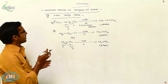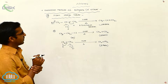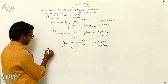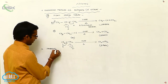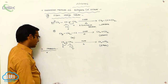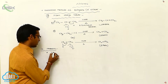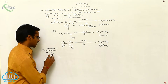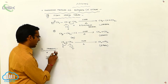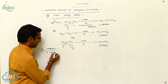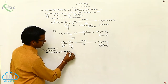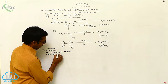These are the preparation methods of alkenes, especially for ethylene. Next, we move on to properties. Generally, alkenes are based on isomers. Now let us discuss isomerism of alkene.